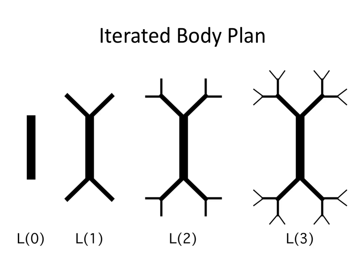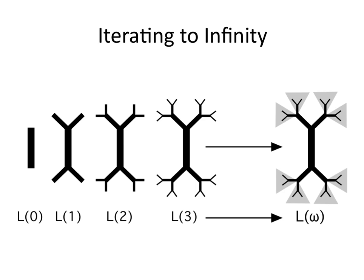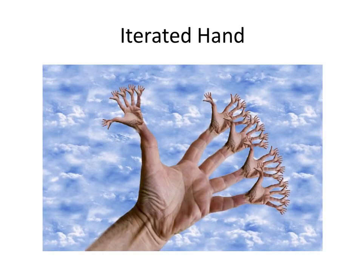We're going to start with an iterated body plan, like what Hans Moravec talks about in his book Mind Children — a kind of bush robot. It's got several iterations of a body plan: a trunk, then two arms and two legs, then hands or feet, then fingers at level three. If we iterate this to infinity, we get this nested iteration at level infinite — infinitely deeply nested and detailed, like Royce's self-representing map. There's a fanciful image of an iterated hand — hands on hands on hands, three levels deep. That's only finite. Imagine if that went on infinitely.